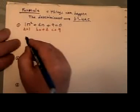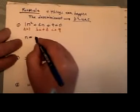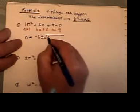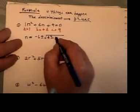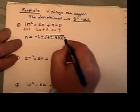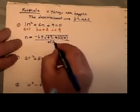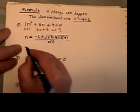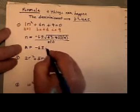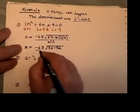So if I throw it into my formula, I get the variable n is equal to the opposite of b, which is minus 6, plus or minus the square root of b squared, which is 6 squared, minus 4 times a, which is 1, times c, which is 9, all divided by 2 times a, which is 2 times 1. What we then get for n is opposite of 6, plus or minus the square root of 36 minus 36, all over 2.